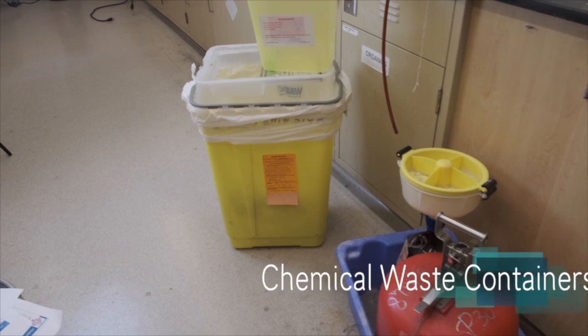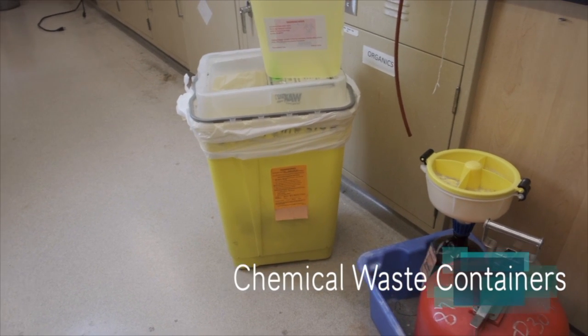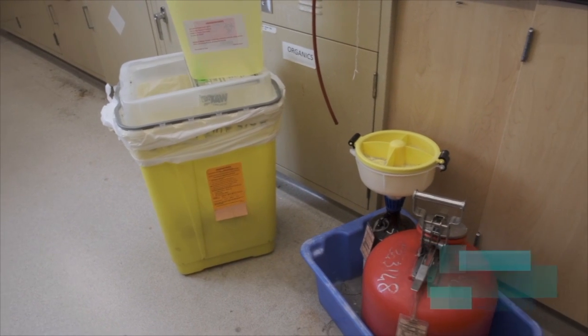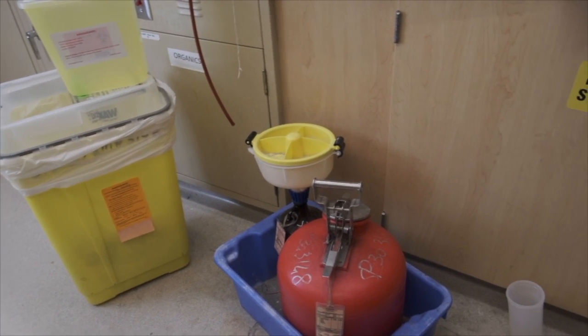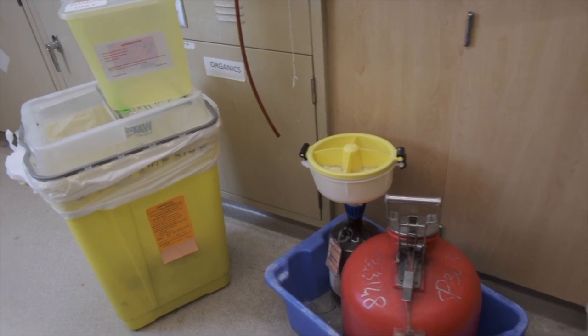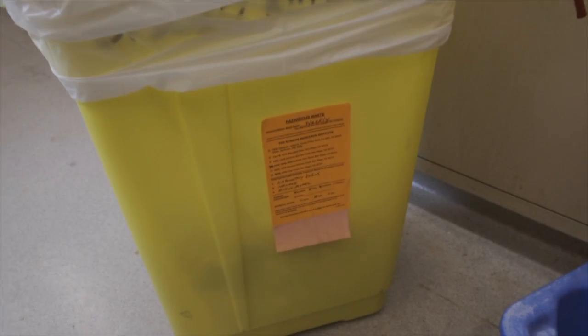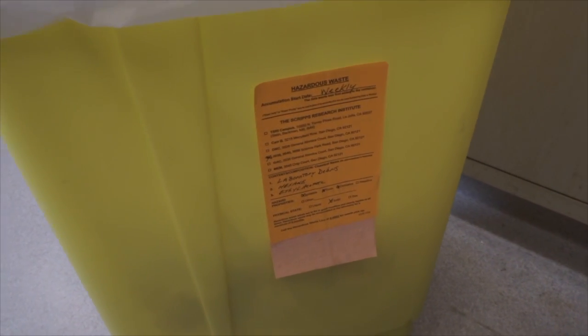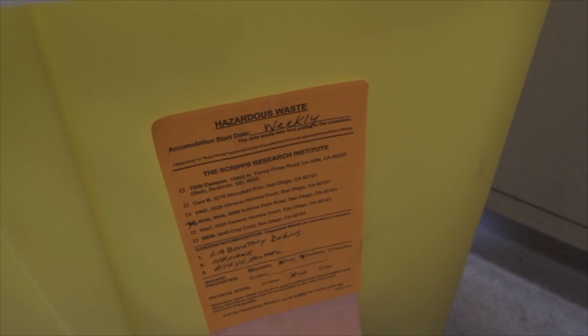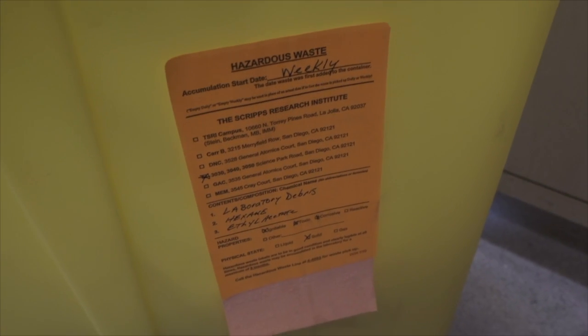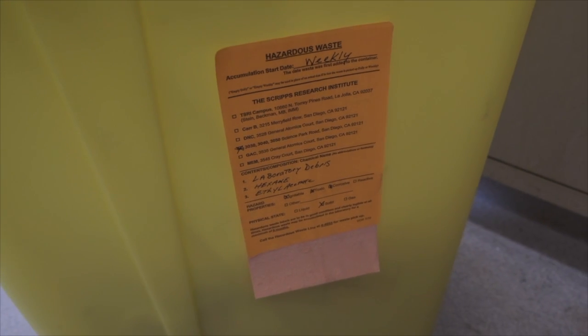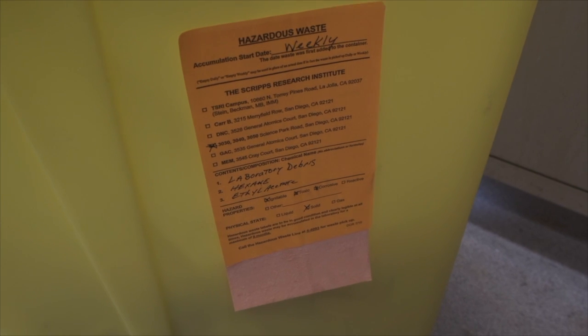Here are some examples of common chemical waste containers that you'll see in the lab. Some things to remember about waste accumulation is that you want to have a hazardous waste label on every chemical waste container, such as this one. Make sure that you fill out all the information on the label, especially the accumulation start date. This is the date that you first add waste into the container.